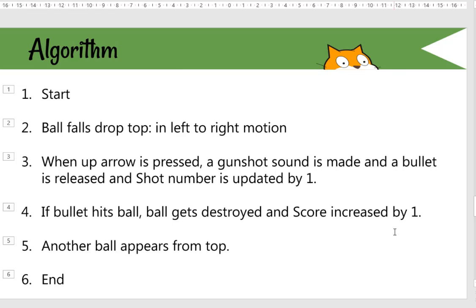Let us look at the algorithm. As soon as the green flag is pressed, the ball should fall from the top in a left-to-right motion slowly. When the up arrow is pressed from the keyboard, a gunshot sound should be made and a bullet should be released. Whenever a bullet is released, the shot number will be updated by one.